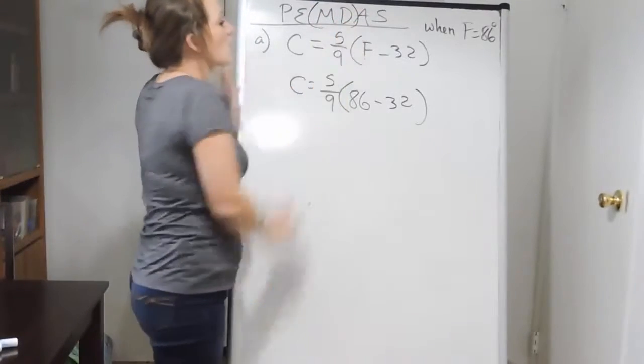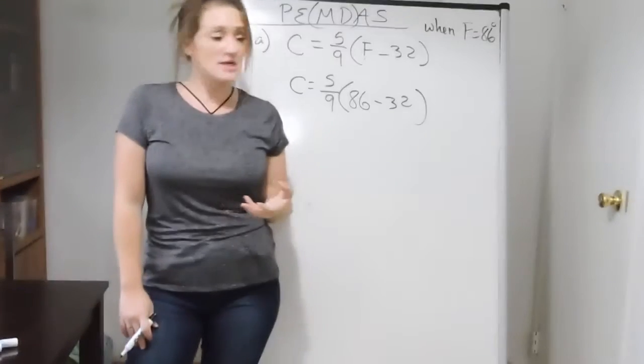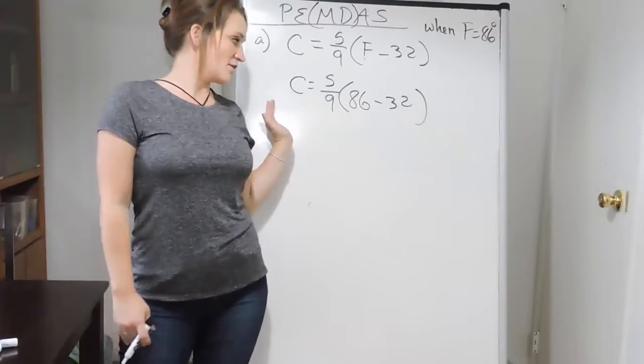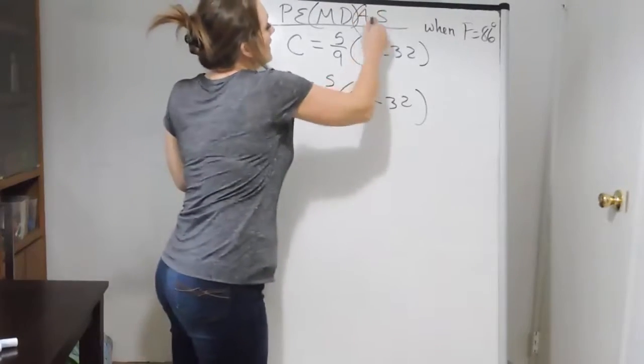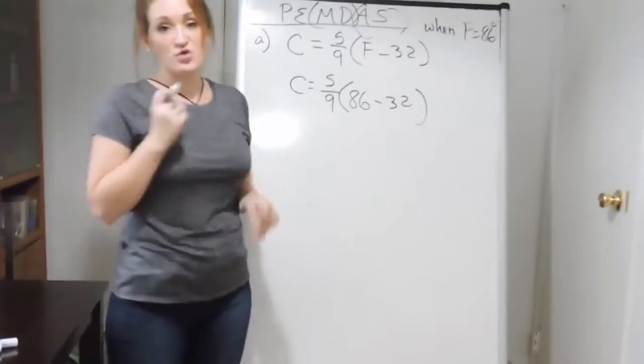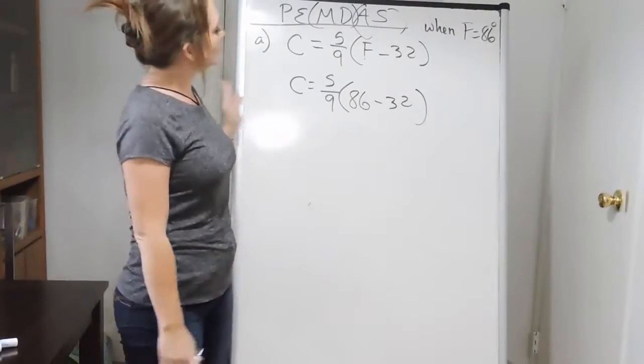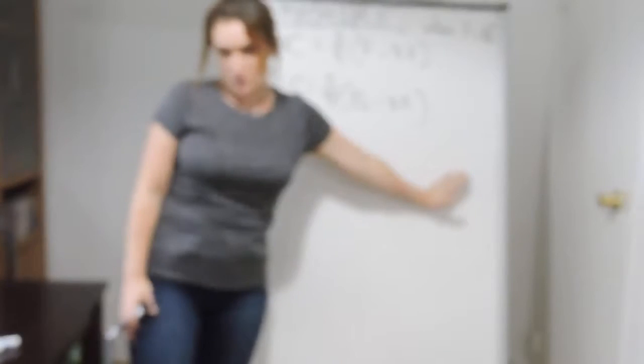You then work on multiplication and division next. Those go hand in hand. You pretty much treat them as if they're the same calculation. Just make sure that you take care of it in order from left to right in your problem. Same thing with addition and subtraction. Those always go last, but you take care of them in order from left to right for your problem.